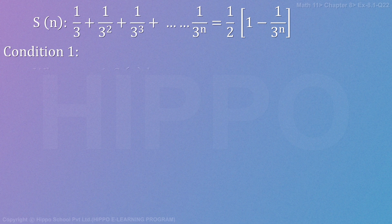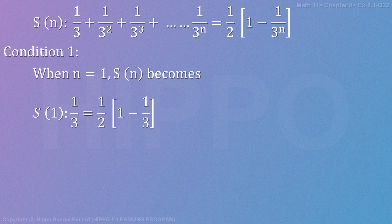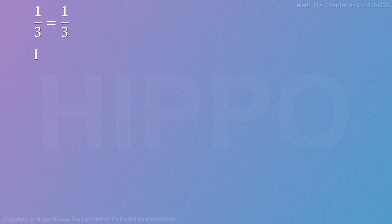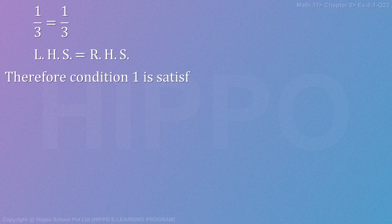Condition 1: When n = 1, S(1) becomes 1/3 = (1/2)[1 - 1/3]. So 1/3 = (1/2)(2/3), and the 2s cancel giving 1/3 = 1/3. Therefore left hand side equals right hand side, and Condition 1 is satisfied.